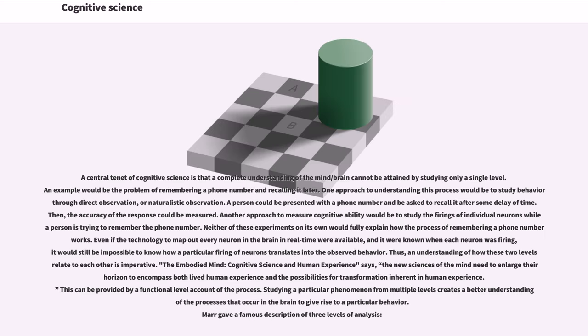A central tenet of cognitive science is that a complete understanding of the mind/brain cannot be attained by studying only a single level. An example would be the problem of remembering a phone number and recalling it later. One approach to understanding this process would be to study behavior through direct observation, or naturalistic observation. A person could be presented with a phone number and be asked to recall it after some delay of time. Then, the accuracy of the response could be measured. Another approach to measure cognitive ability would be to study the firings of individual neurons while a person is trying to remember the phone number.